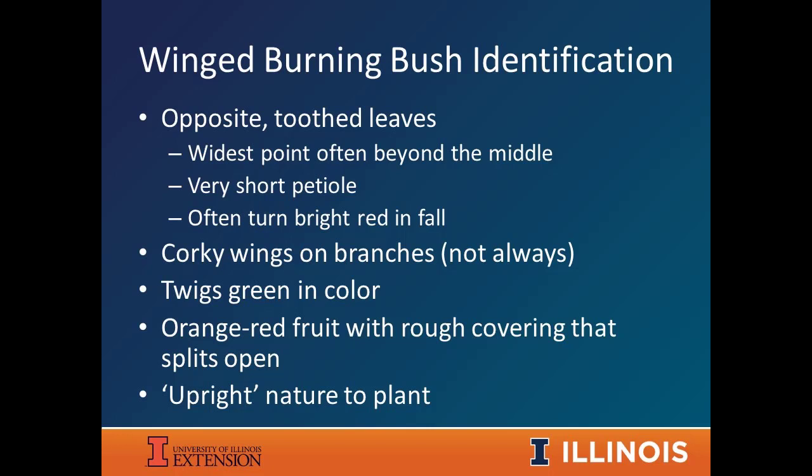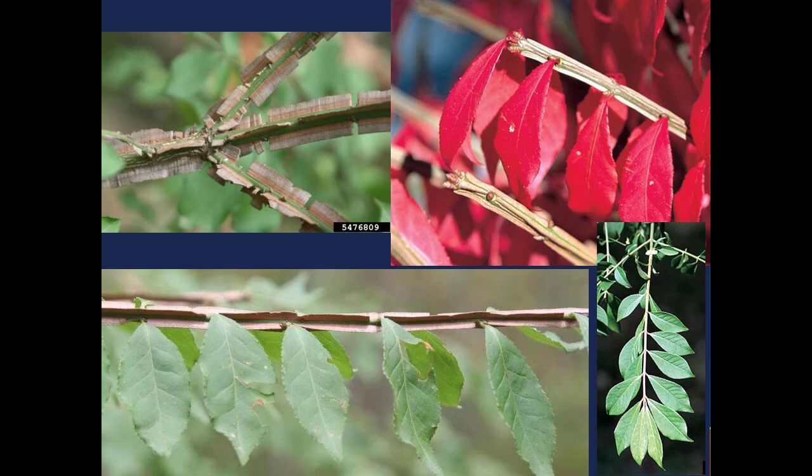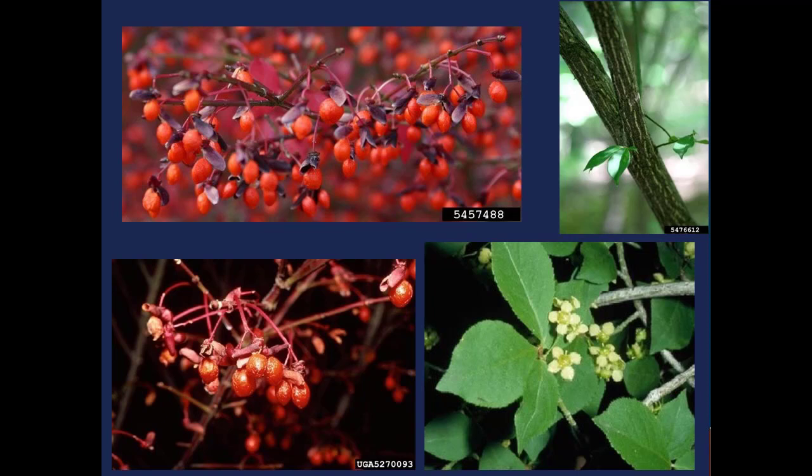Burning bush is pretty easy to identify but you have to be careful because we do have a native euonymus — our native wahoo — that looks similar. Both are opposite with toothed leaves. The invasive winged burning bush has a petiole that's almost non-existent, with the leaf almost directly attached to the twig and widest toward the end — different from our native one which has a petiole and is widest in the middle. It usually has corky wingings on the twigs, but not always, and typically has green twigs.